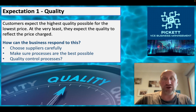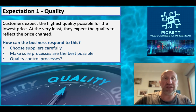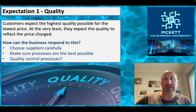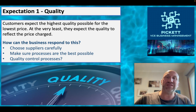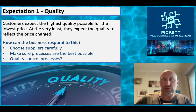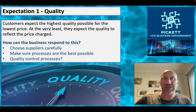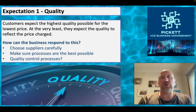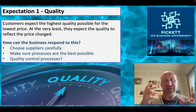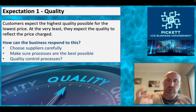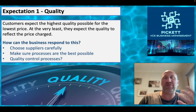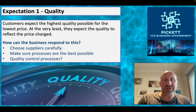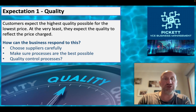How can a business respond to the expectation of quality? First, choose your suppliers carefully - if you don't have quality supplies, the end product or service won't be of high quality. Make sure the processes used in production are the best possible, and you might even implement quality control processes. We look at those in more detail in Year 12, but you can have processes within your business specifically focused on quality control.